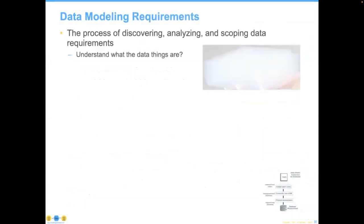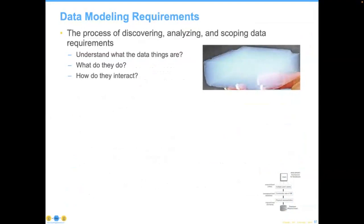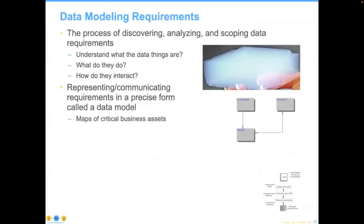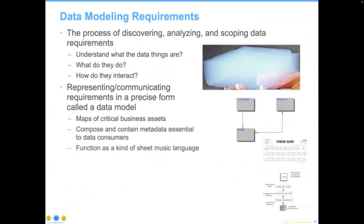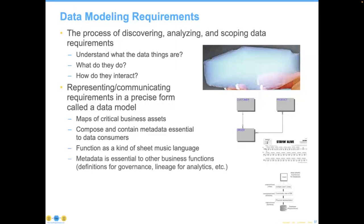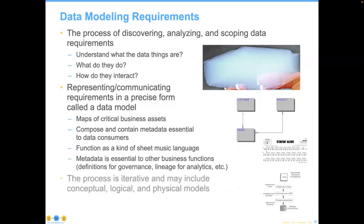The model variances focus on trying to have as many things in common as we can. If we have too many data structures, we're going to spend all our time transforming between data structures. Data is going to become the most valuable thing in our assets going forward. It maps critical business needs, contains essential data to the data consumers, and functions as a kind of sheet music — a good set of musicians who can all read music are going to ask for the sheet music before they start to sing. The metadata is essential to other business functions. The process is iterative, and once the modeling is done, make sure you're trying to achieve a specific goal and not just doing it for modeling's sake.